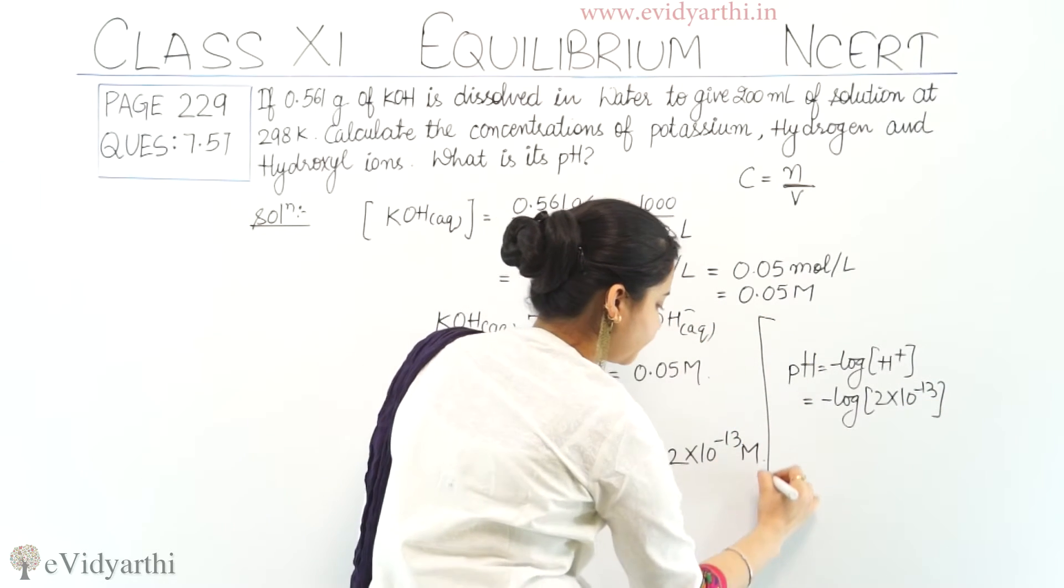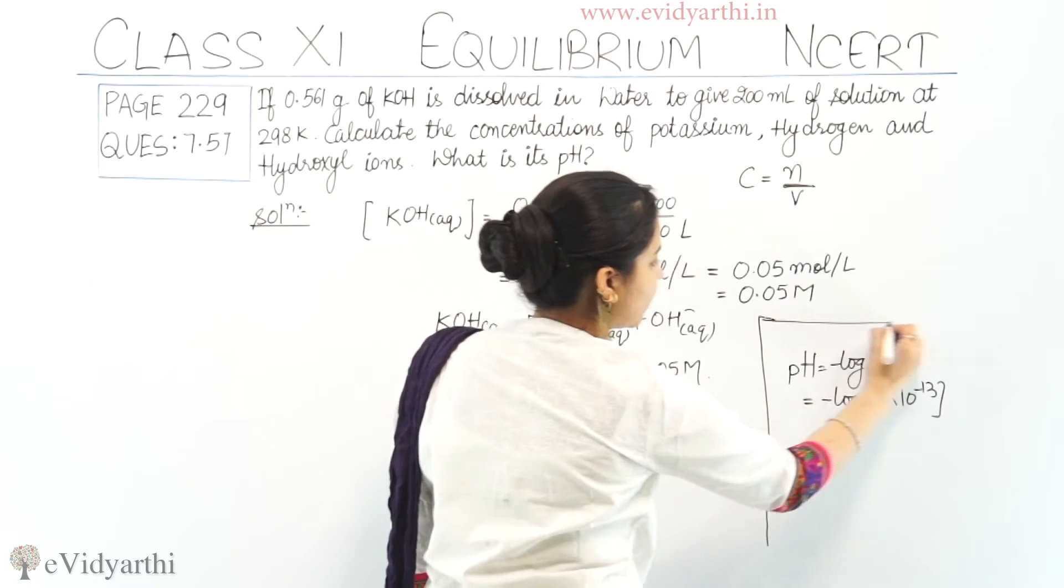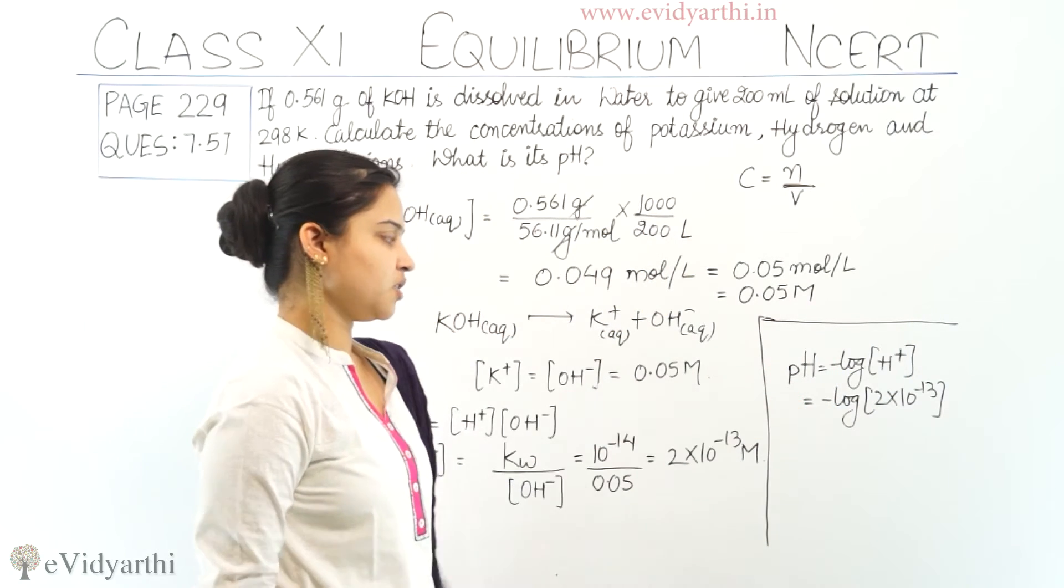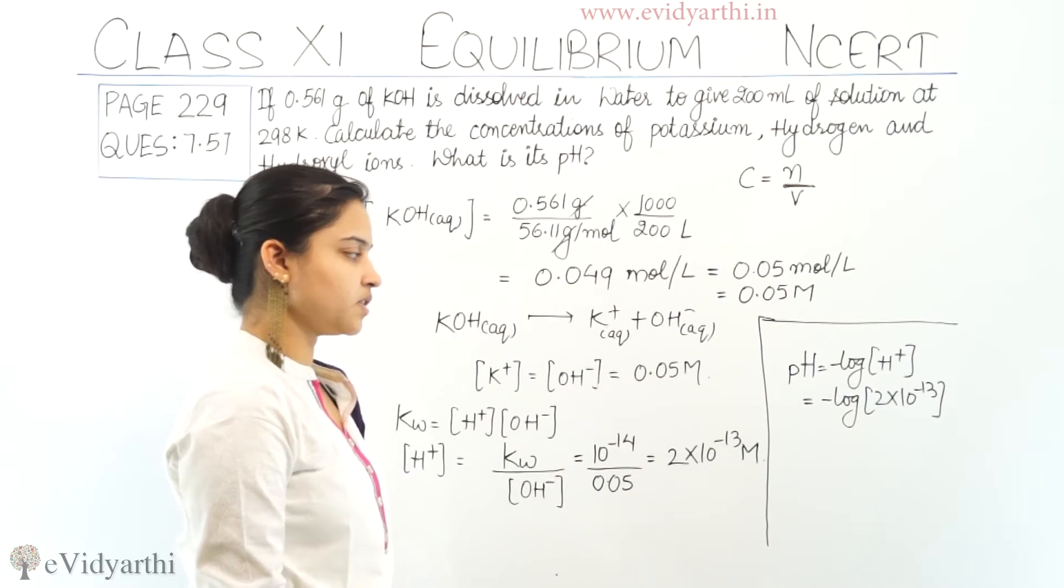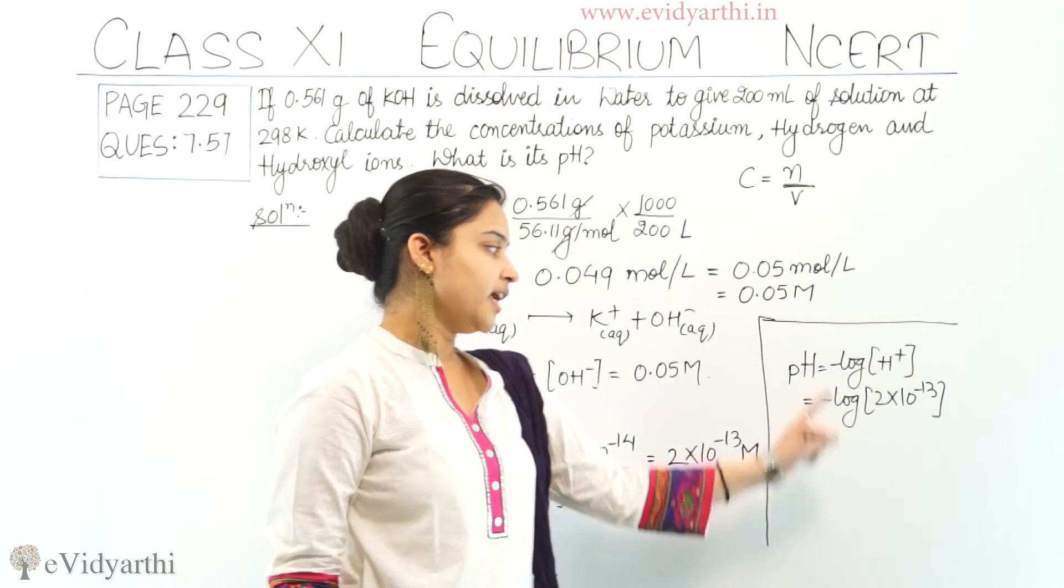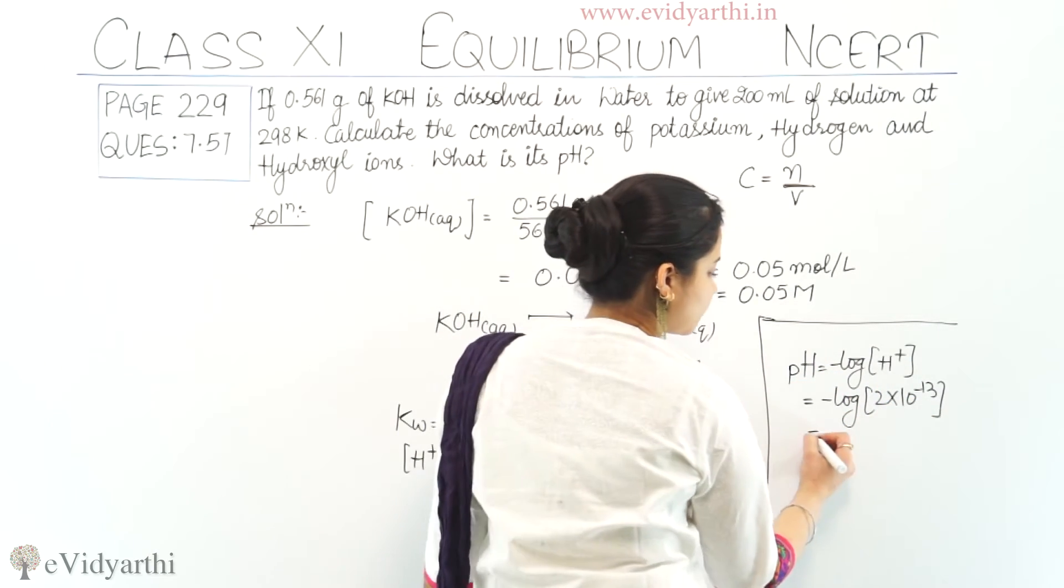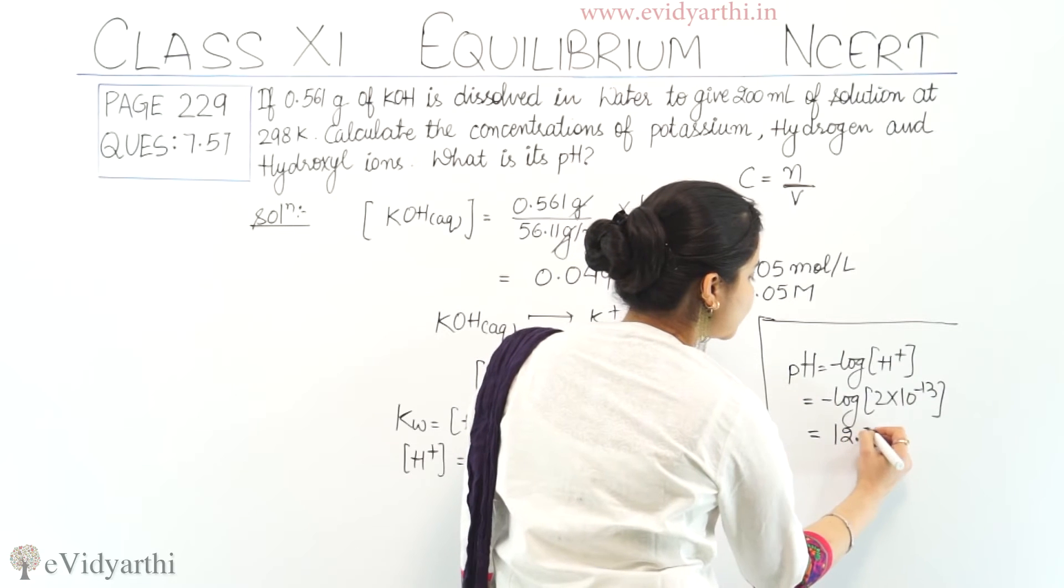pH jo hummara niklae ga. pH ki jo value ai di. Dekhi, mahi ihaan solve kari hoon. pH is equals to negative log of hydrogen ion concentration. Minus log of 2 into 10 raise to power minus 13. Isko jub ab solve karienge. Ab ko anflin milega pH ka. 2.70.